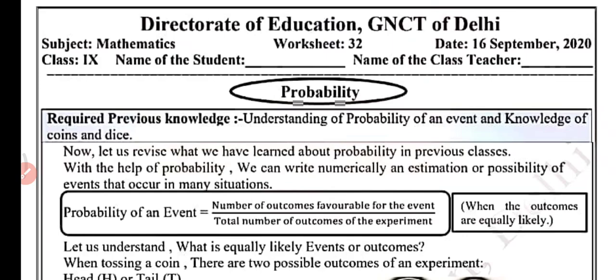Similarly, when we throw a dice, then the outcomes are 1, 2, 3, 4, 5 and 6. Aapko in outcomes ke baare mein pata hona chahiye.